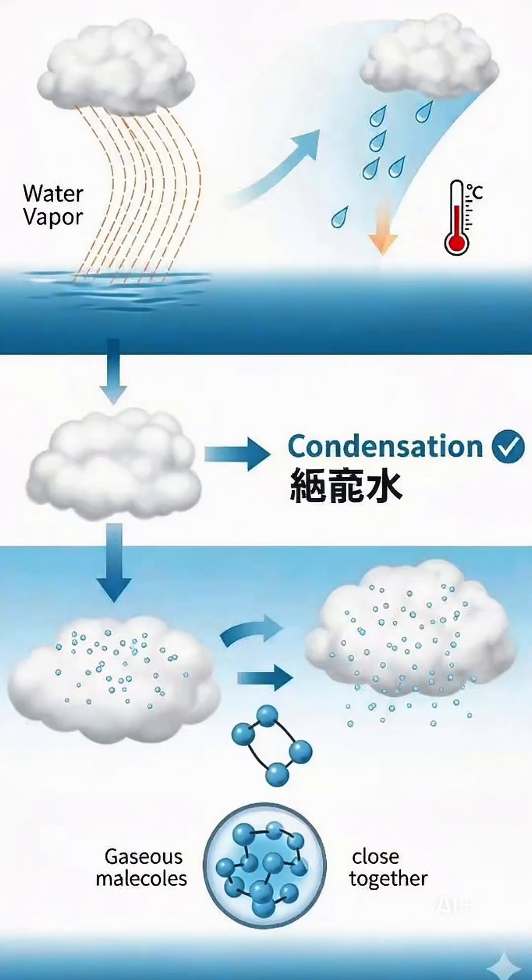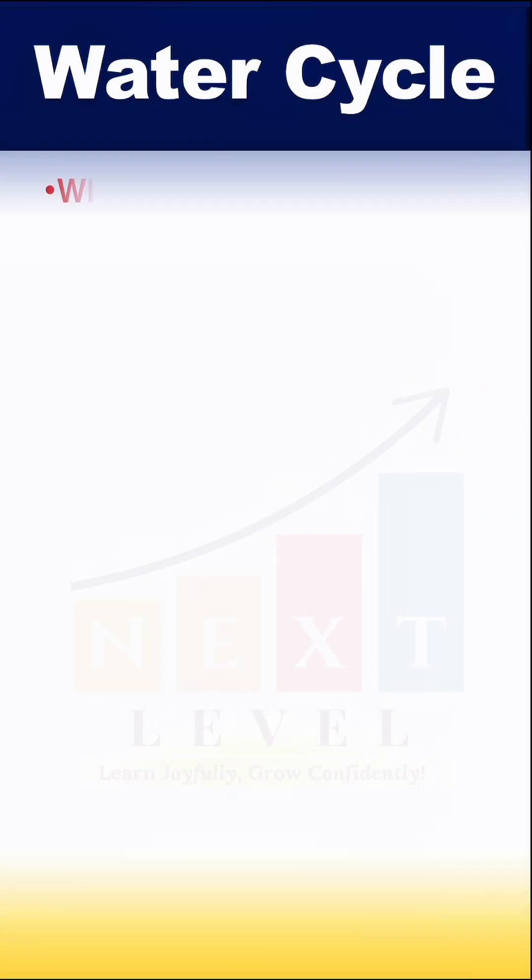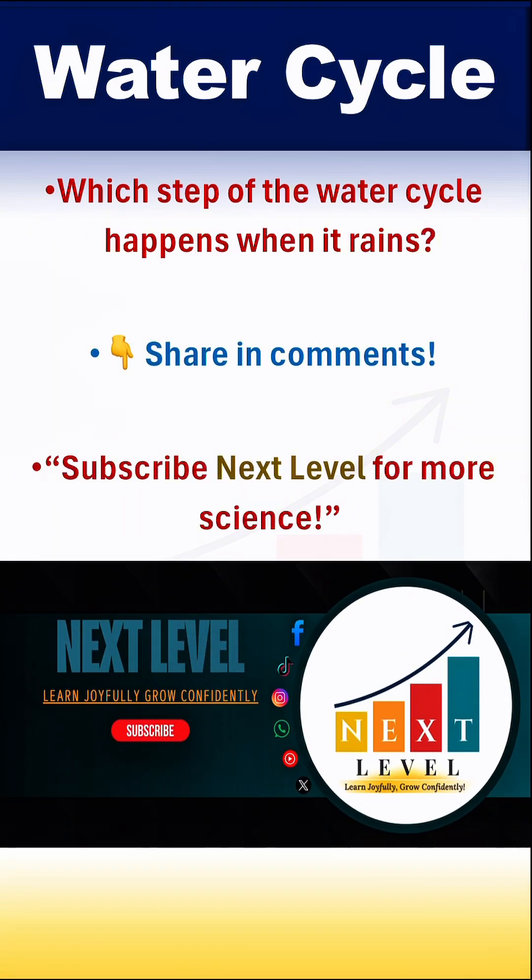So condensation forms cloud in the water cycle. So let me know, which steps of water cycle happens when it rains? Share in comments. Subscribe next level for more science videos.